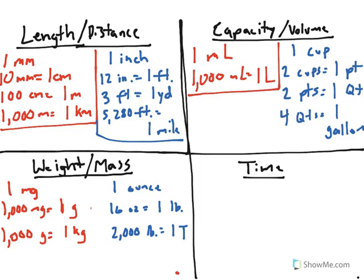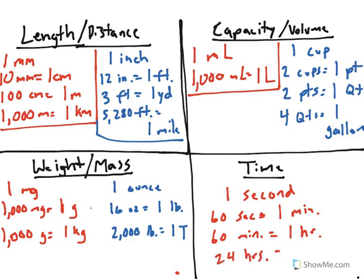And last, we have time. Time is uniform no matter where you are. It's used the same in both the metric system and the U.S. system. You have one second. There are 60 seconds in one minute, 60 minutes in one hour, and 24 hours in one day.